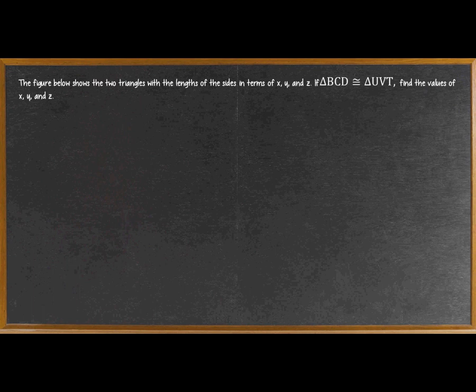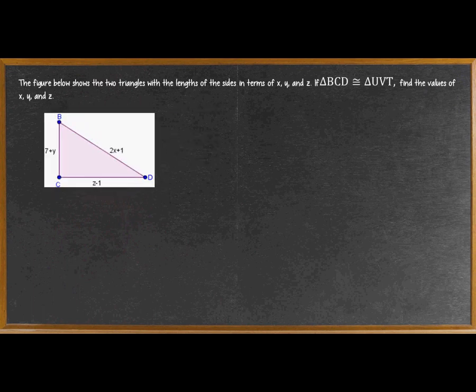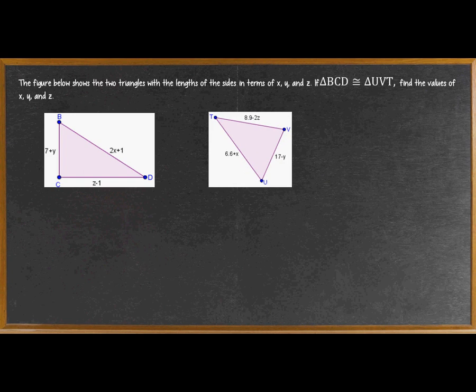I have here an example. The figure below shows the two triangles with the lengths of the sides in terms of X, Y, and Z. If triangle BCD is congruent to triangle UVT, find the values of X, Y, and Z. The left illustration is triangle BCD, and the right side is triangle UVT, and they are congruent.